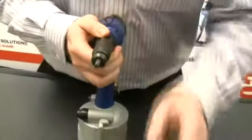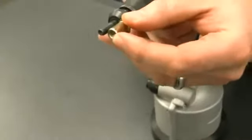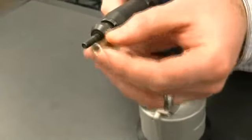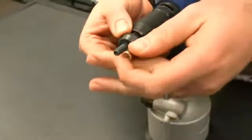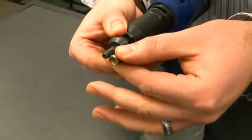The final step with setting up the nosepiece is making sure that the mandrel extends beyond the rivet nut approximately one thread. You can see here it's a little bit longer, so we can actually thread this out a little bit more to make sure we have one thread extending beyond the rivet nut.